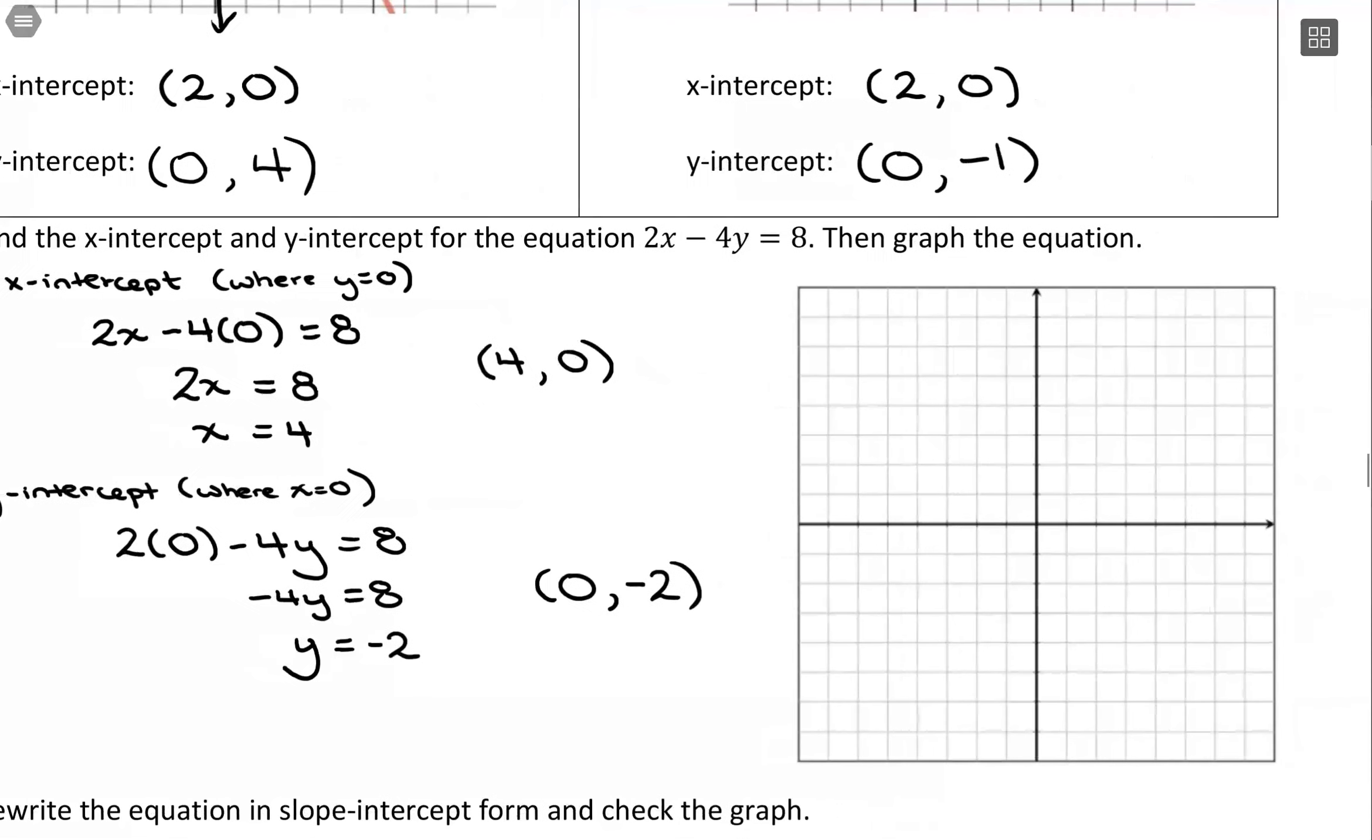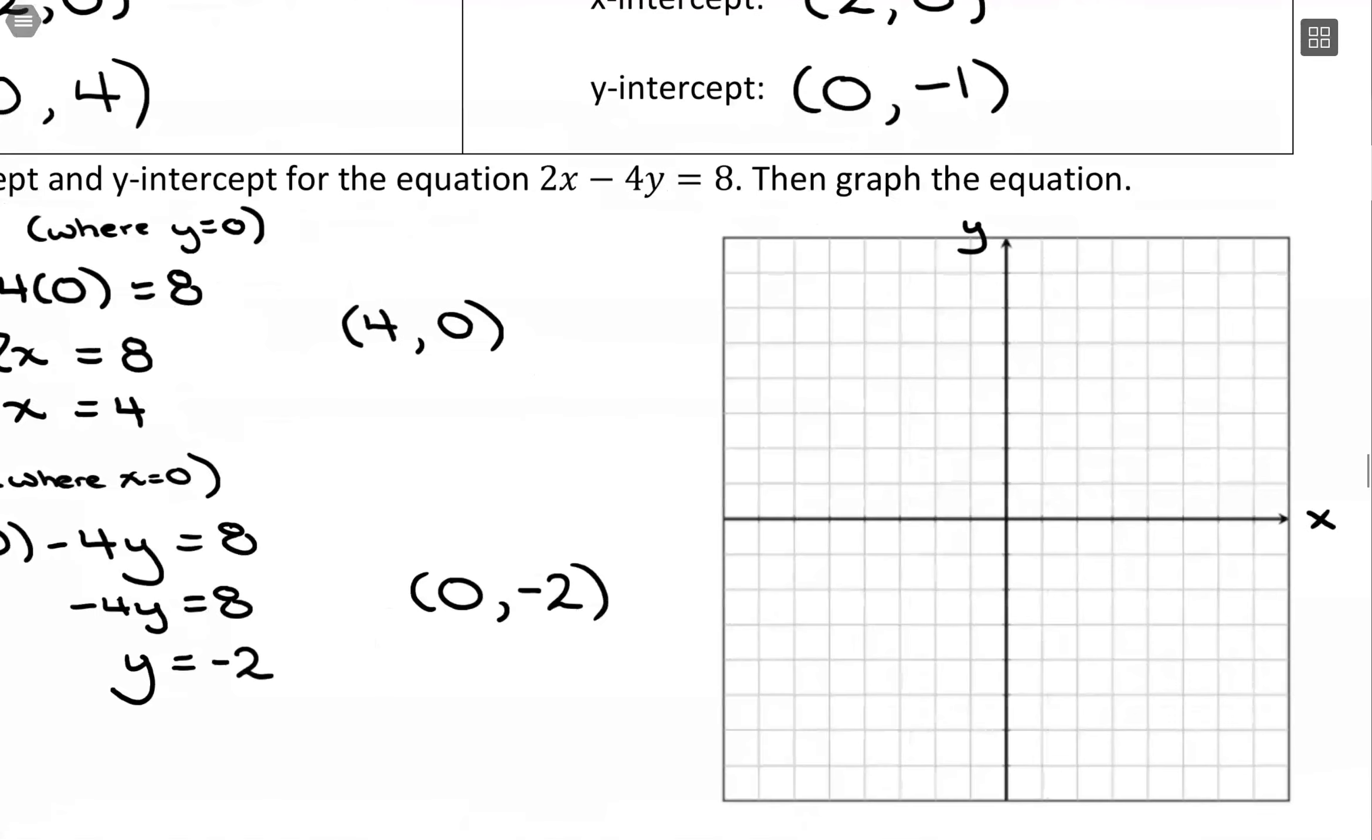Alright, so with that we can start to graph. So here I can see my x and y-axes already set up, and then I just need to create a scale. These are pretty small numbers, so I'm just going to use a scale of 1. So 4, 0, so x is 4, and then y is 0, so there's my x-intercept, and then y of 0, negative 2, and then we just connect those together.